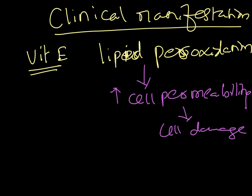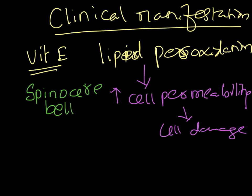In vitamin E deficiency, lipid peroxidation predominates and can affect many cells. The cells most commonly affected are the myelinated neurons in the spinal cord. These long spinal myelinated neurons have membranes that need protection along their entire tract. Without vitamin E, they are most susceptible, giving rise to spinocerebellar degeneration or spinocerebellar ataxia.